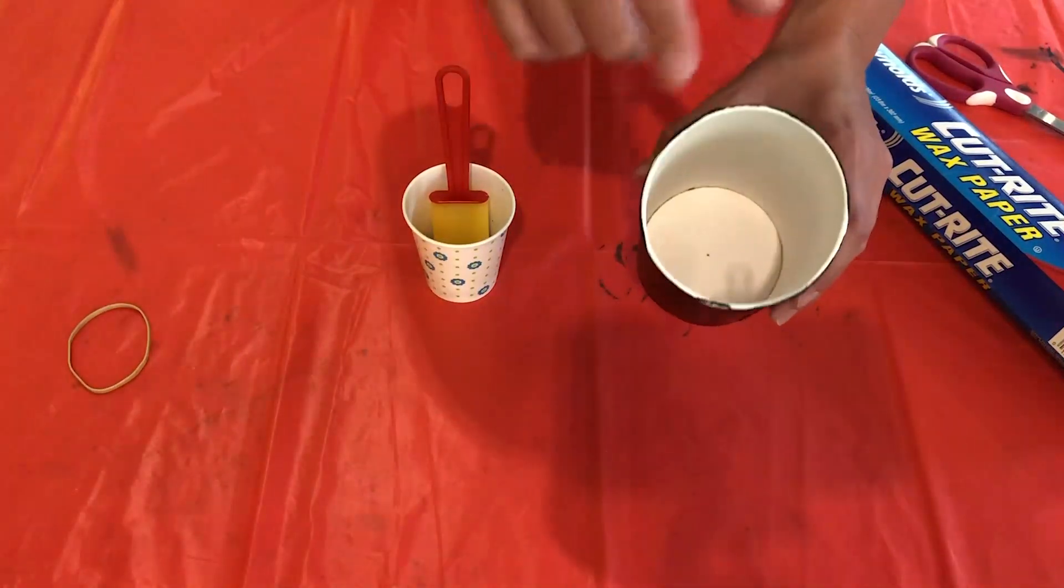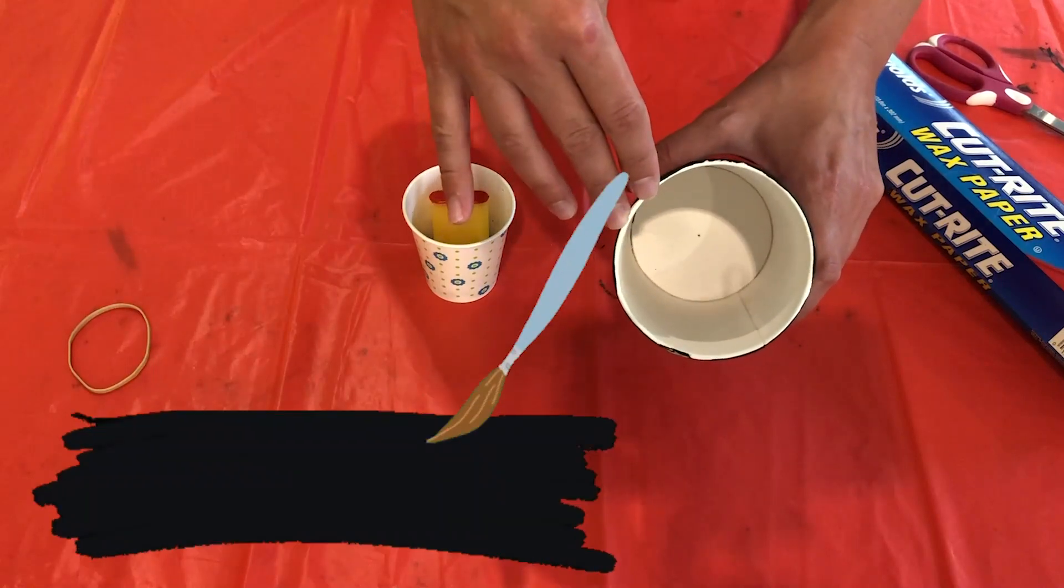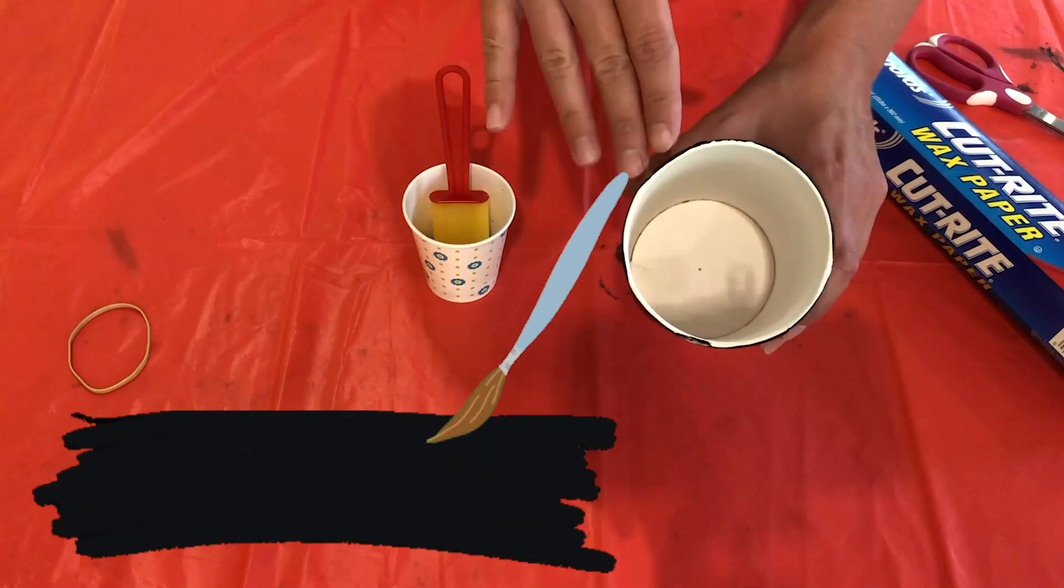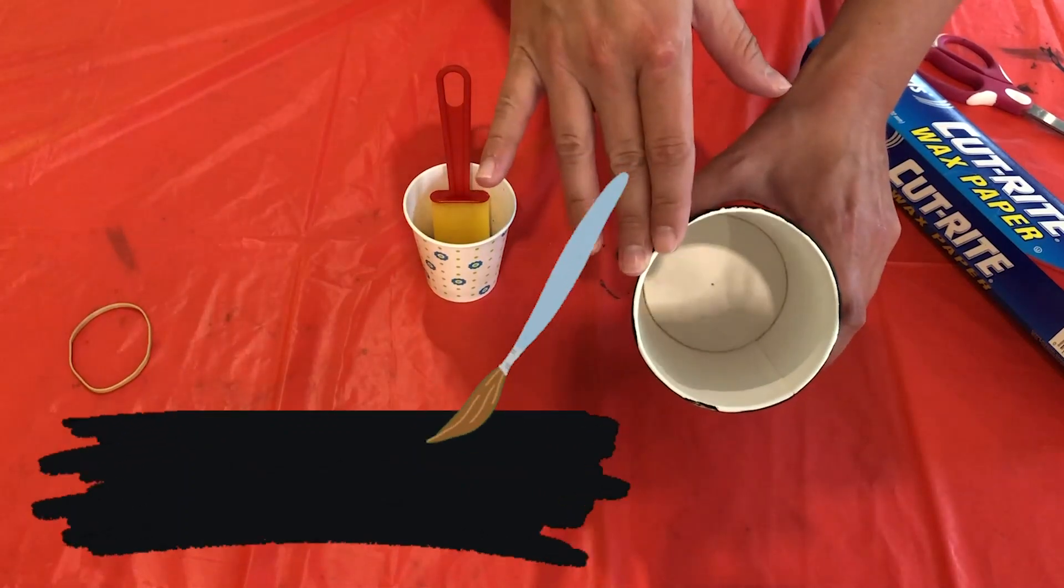So before we move on, I am gonna point out if the inside of your container is a light color, go ahead and paint that black as well, because you need it to be completely dark in order to be able to see the image when we actually use the camera. So let's go ahead and do that.